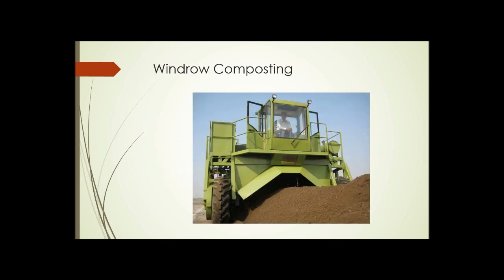Here's an example of windrow composting. This type of machine can drive down a windrow — and based on the height of the person in the cabin, the windrow is probably close to five or six feet high and probably double that in width. This machine straddles the windrow, runs down it, keeps the windrow contained, and has turning blades that mix the material, turn it, and aerate it. A very efficient way to compost large amounts of material.